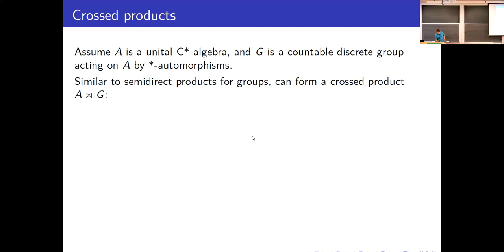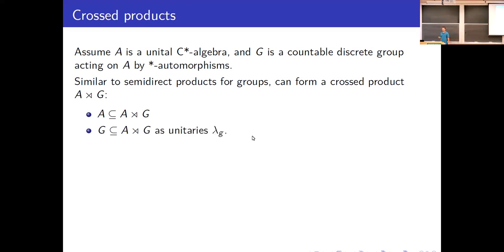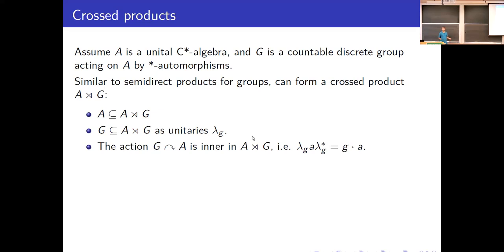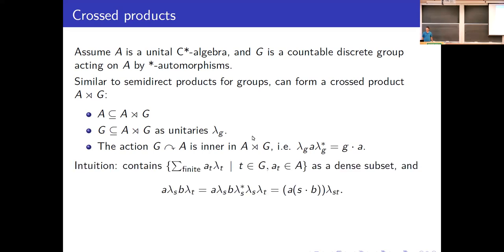It's very similar to a semi-direct product of two groups. It should satisfy a few things: it should contain a copy of A, it should contain a copy of G, and I'm going to call each element G in there as lambda_G. The action of G on A should be inner inside of this larger C*-algebra — G acting on A should be the same as conjugating by the unitaries lambda_G. It should just be finite sums of the form sum of a_T lambda_T, where T are your group elements and a_T are coefficients in A.